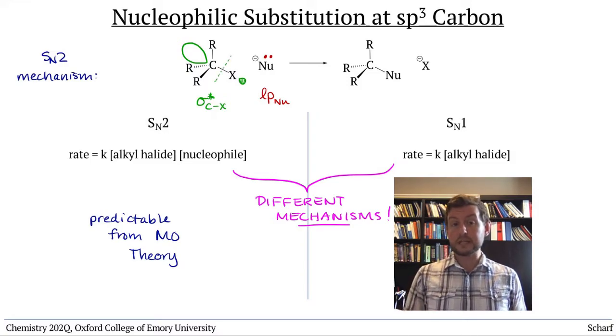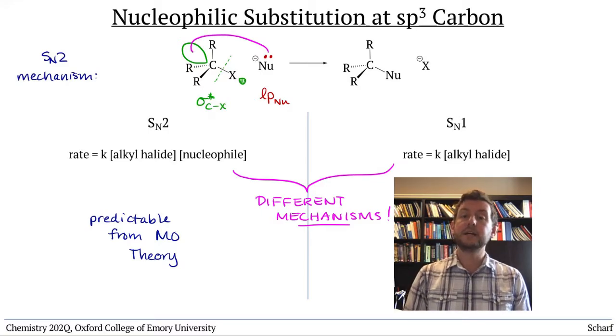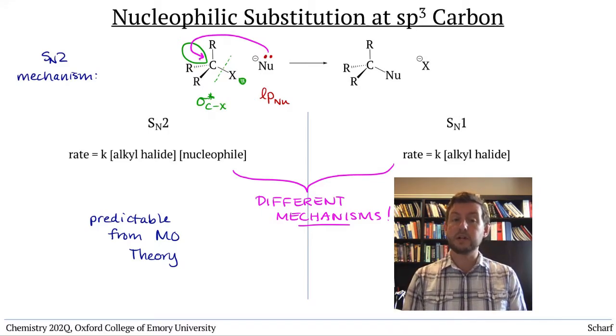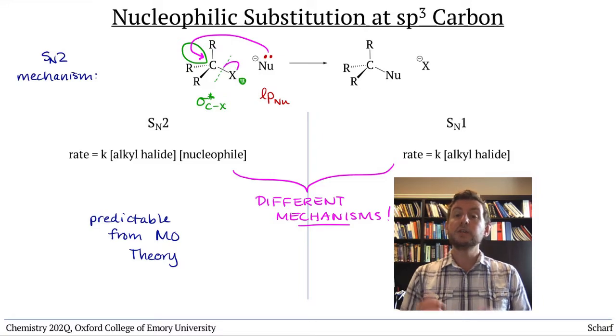So the mechanism looks like this. The nucleophile attacks carbon, putting electrons into the antibonding orbital between carbon and the leaving group. So the bond between carbon and the leaving group breaks.